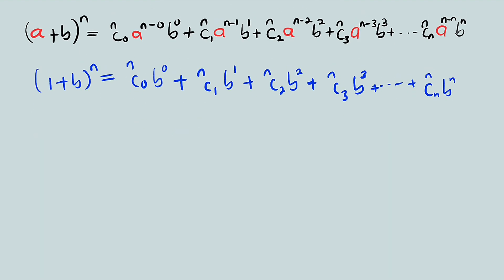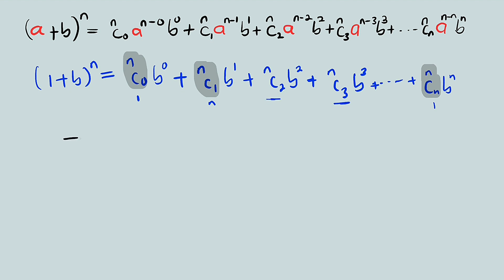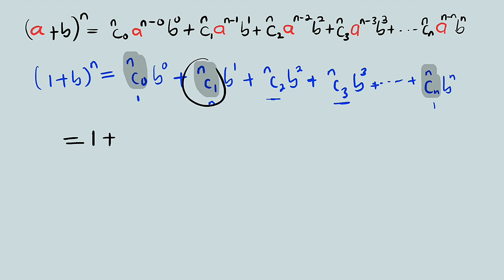Let us break the combinations. Remember that nC0 is equal to 1 and nC1 is equal to n. So nC0 gives us 1, nC1 gives us n, and nCn is also equal to 1. From the first term we only have 1, because nC0 is 1 and b to the power of 0 is also 1. The second term is just nb, because nC1 is n and b to the power of 1 is b.